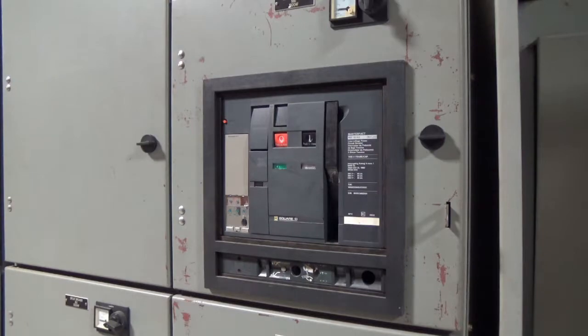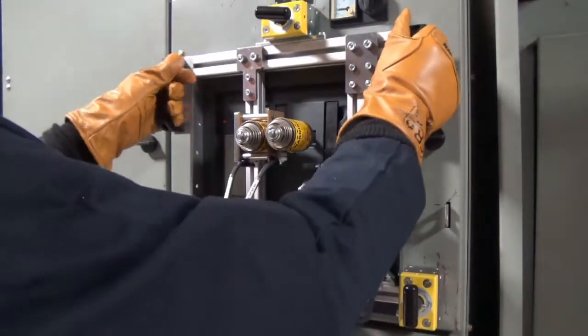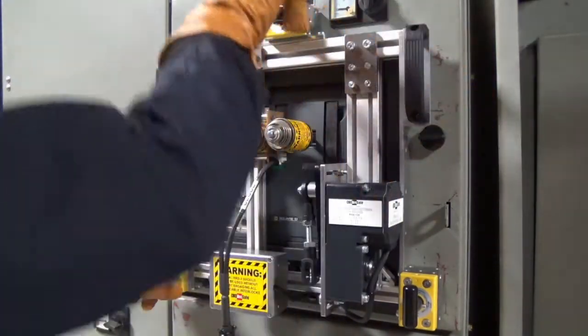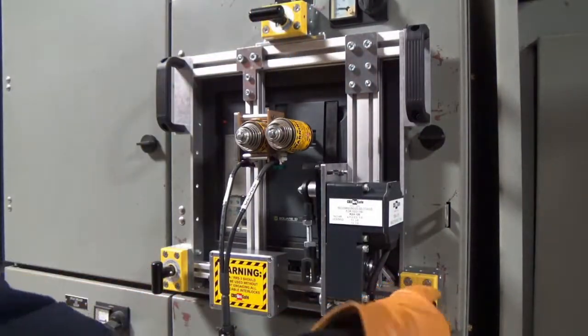With the charging handle adapter removed, align the RSA with the top and sides of the breaker's dust shield, and fix it using the twist lock magnets.